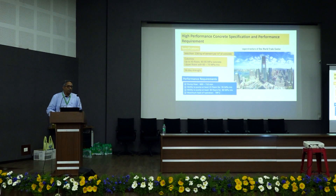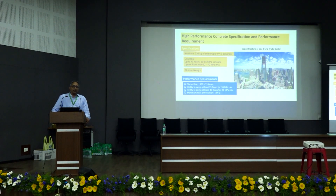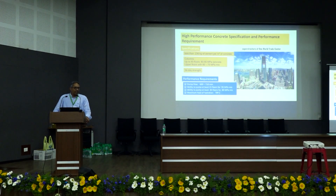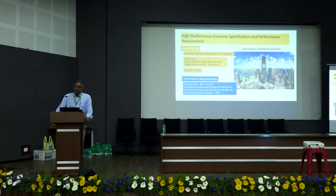Just to give an idea about performance-based requirements: this is a specification put in place 10 years ago for One World Trade Center, the building that replaced the Twin Towers. The contractor was required to produce concrete of 80 or 90 MPa compressive strength using only 236 kg of cement per cubic meter — a low number that would make most of us wince, but it was accomplished. A lot of other things had to be done in addition to using plain cement to produce the concrete.